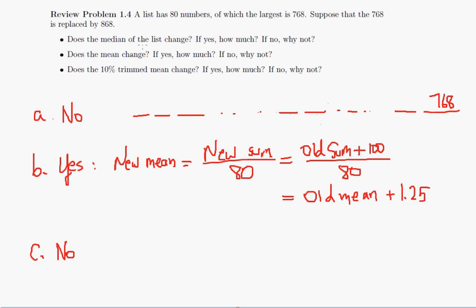So 10% of 80 is 8, so we would remove the smallest eight, and we would remove the biggest eight, and then take the average of the 80 minus 16, which is 64 entries that are left. So clearly the 768 gets omitted, so if the 768 gets replaced by 868, that does not affect the 64 numbers that are in the middle, and so the 10% trimmed mean does not change.